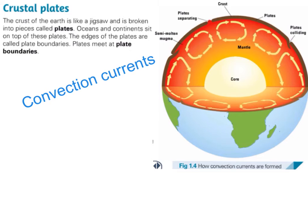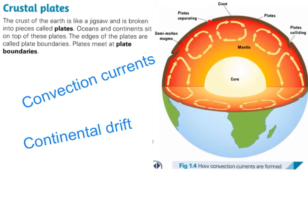Convection currents in the mantle cause the plates to move. The arrows in the diagram represent convection currents — movement inside the mantle. The continents are floating on top of the mantle, and as the mantle moves around due to convection currents, the plates on top of it also move. This movement of plates is known as continental drift — literally the continents drifting away from and towards each other.